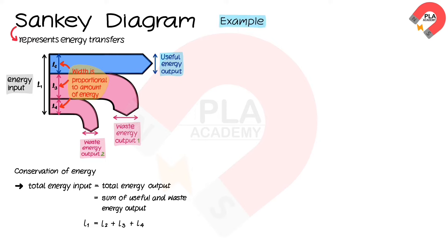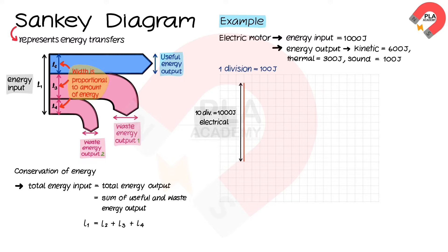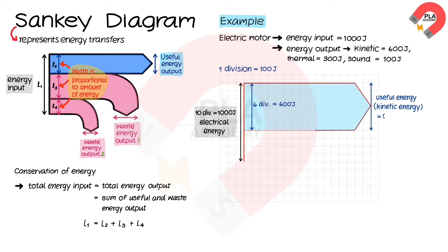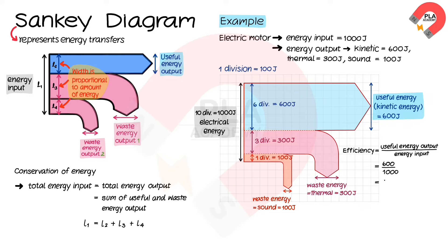For example, let's draw a Sankey diagram for an electric motor with electrical energy input of 1000 Joules, energy output as kinetic energy of 600 Joules, thermal energy of 300 Joules, and sound energy of 100 Joules. Setting up the scale where one division represents 100 Joules: the input arrow width is 10 divisions (1000 Joules); the straight arrow for kinetic energy is 6 divisions (600 Joules); the bent arrow for thermal energy is 3 divisions (300 Joules); the bent arrow for sound energy is 1 division (100 Joules). The efficiency of the motor is 600 / 1000 = 0.6, or 60%.